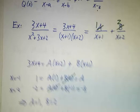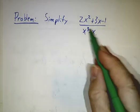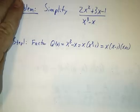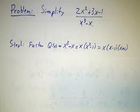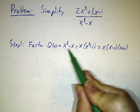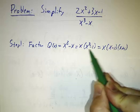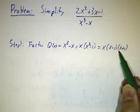So let's do another problem with more factors. So let's try to simplify the expression 2x squared plus 3x minus 1 over x cubed minus x. The very first step is you always need to factor the denominator. So in this case, x cubed minus x, you can immediately see that it's divisible by x, so you pull out a factor of x. What's left is x squared minus 1, and that factors as x minus 1 times x plus 1.